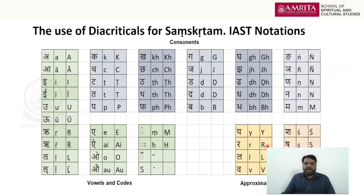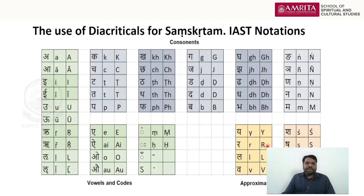Whenever we refer to names — especially in the book as well as in our course — we use diacritical marks for Sanskrit, so that whatever words we use are not confusing. For example, when you write 'Rama' in English, it can also be read as 'Rama.' But when you use Sanskrit diacriticals, Rama can be correctly written with the dīrgha and other marks, making it unambiguous.